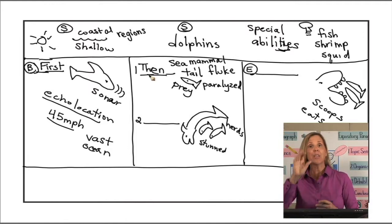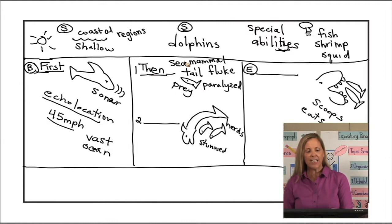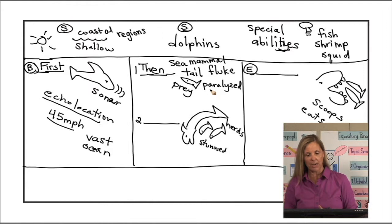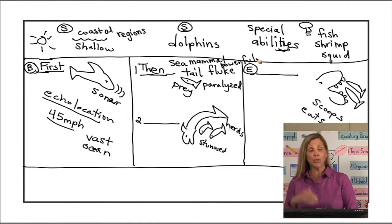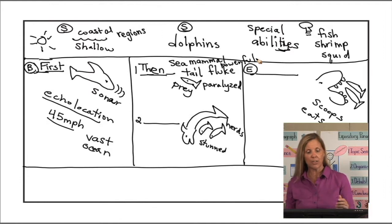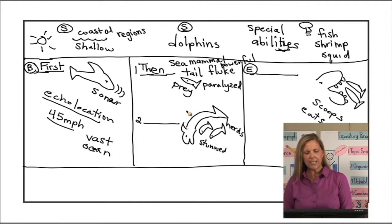Next, turn the paper over and read through the organizer, putting capitals, commas, and stops on the whole organizer. Starting with the topic sentence: 'Every day, in the coastal regions, dolphins use their special abilities to catch fish, shrimp, and squid.' First, comma, 'they use sonar or echolocation to find their food in the vast ocean.' Then, 'the sea mammals slap their powerful tail flukes to paralyze their prey.' Next, 'they use their tail flukes to herd together the stunned sea creatures into a large group.' In the end, 'the dolphins use their evenly spaced teeth to help scoop up the ocean animals.' 'These amazing mammals use a unique method to catch their meals.'